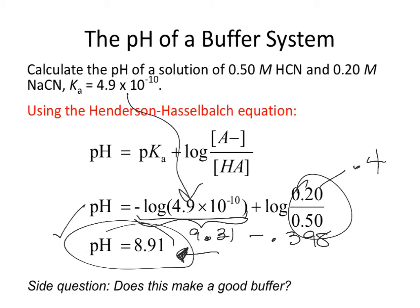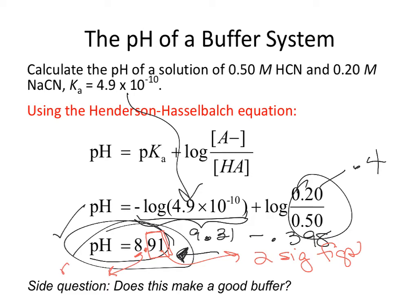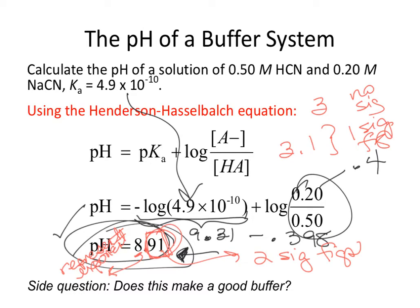A quick reminder about sig figs for numbers derived from logarithms: only the digits to the right of the decimal are significant. The digits to the left of the decimal simply represent the exponent and don't indicate precision. So a pH of 8.91 has two sig figs, and a pH of 3.1 has one sig fig.